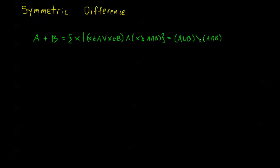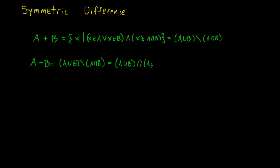With this written, we can use all the properties of sets to find a very neat property of the symmetric difference. Notice that A plus B — the symmetric difference between A and B — equals A union B minus A intersection B. This difference can also be written as A union B intersected with the complement of A intersection B. So I'm saying it's in A union B and it's not in A intersection B, or equivalently it is in the complement of A intersection B.